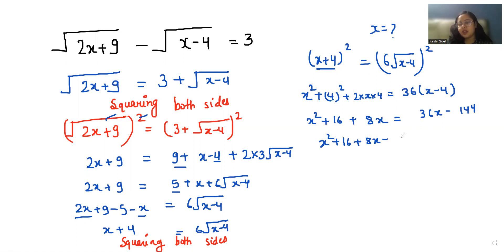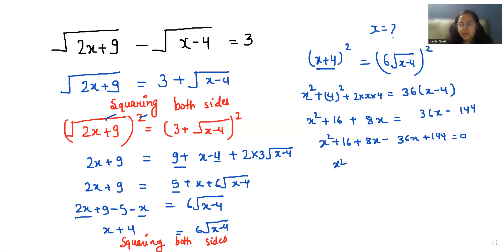So x² + 16 + 8x equals 36x - 144. Rearranging: x² + 16 + 8x - 36x + 144 = 0. So x² - 28x + 160 = 0. This is now a quadratic equation, so we can use the middle term splitting method.